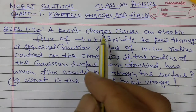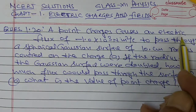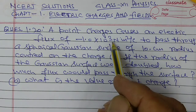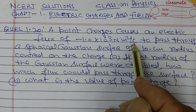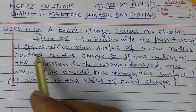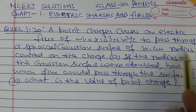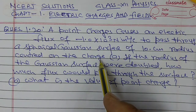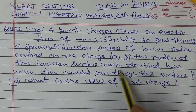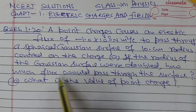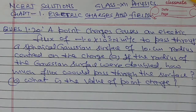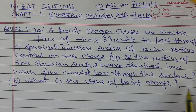Question number 20. A point charge causes an electric flux of minus 1 into 10 to the power 3 newton meter square per coulomb to pass through a spherical Gaussian surface of 10 centimeter radius centered on the charge. Part A: if the radius of the Gaussian surface were doubled, how much flux would pass through the surface? Part B: what is the value of the point charge?